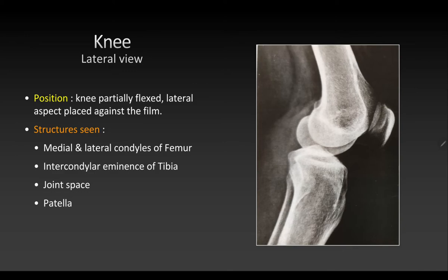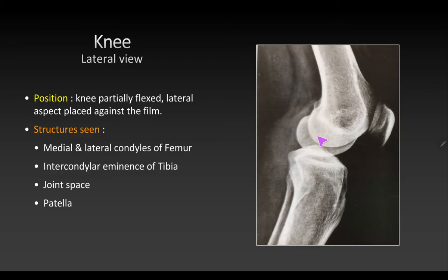After the AP view, it is mandatory to take a lateral view as well, since certain structures are better seen in this view. The patient is positioned with the knee partially flexed and the lateral (fibular) side placed onto the detector. The structures seen are the larger medial condyle of femur, the smaller lateral condyle, the head of tibia, the fibula, and most importantly the patella is now seen much more clearly. On the lateral view, the joint space will not be clear due to overlapping bones.